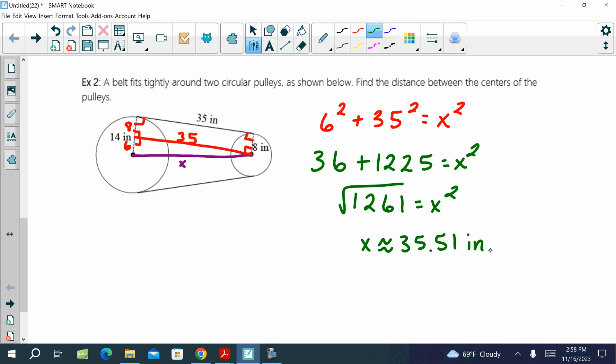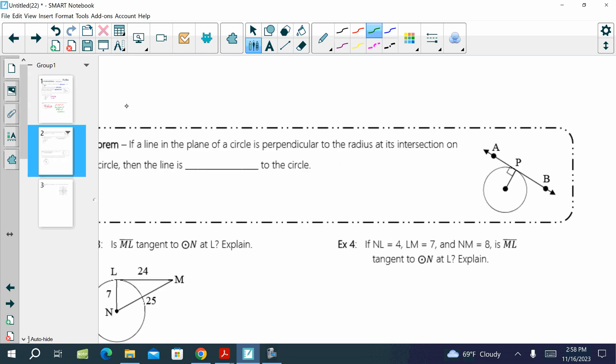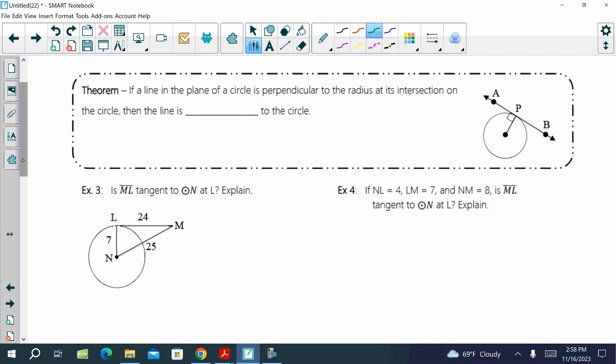Flip it over. Next theorem. If a line in the plane of a circle is perpendicular to the radius at its intersection on the circle, then the line is a tangent. So what is this? It's the reverse of the theorem we just learned. So this is the converse of it. So if we have a marking of perpendicular from the radius to the line outside, then we know that that line outside is a tangent line. Any questions there?